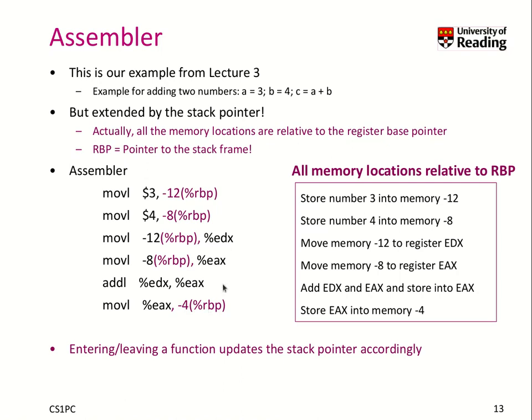So what does it mean? Well, all those memory locations, minus 4, minus 8, and minus 12, they are basically the locations of these variables A, B, and C. And they have been assigned by the compiler.